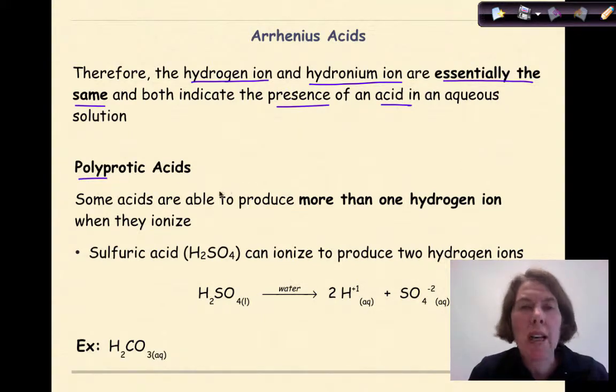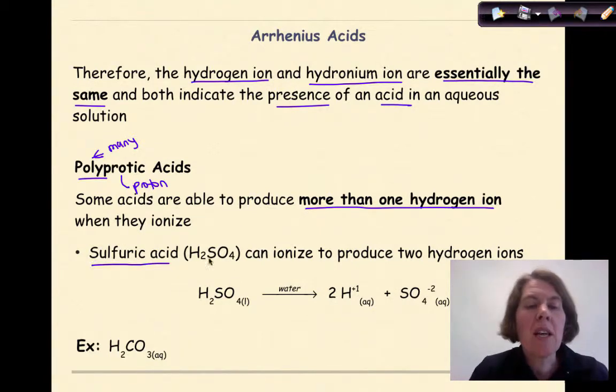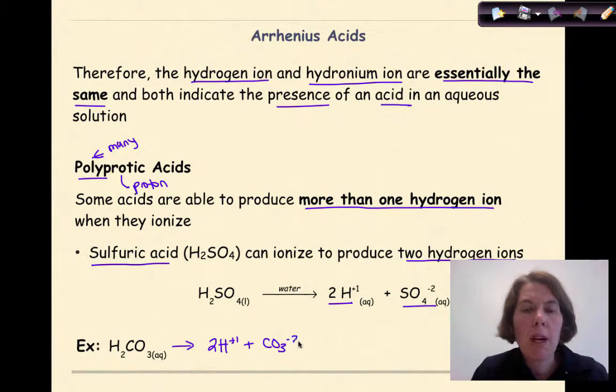Now let's talk about polyprotic acid. Poly means many, protic means proton, so these are many proton acids. Some acids are able to produce more than one hydrogen ion when they ionize. Sulfuric acid, H2SO4, can ionize to produce two hydrogen ions theoretically. H2SO4 liquid in water can form two hydrogens and a sulfate ion if it ionizes completely. Another example could be carbonic acid, H2CO3, which can break down in water to form two hydrogen ions and the carbonate ion, CO3-2.